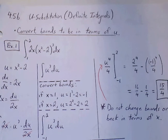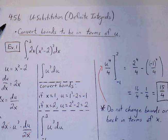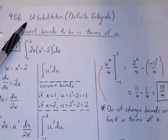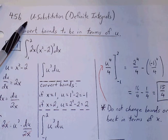Alright, this section is 4.5b. We're finishing up 4.5. This is u-substitution involving definite integrals.